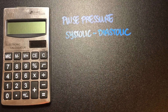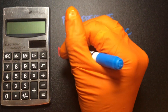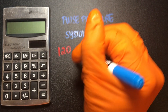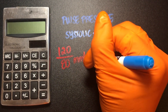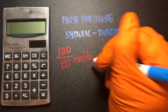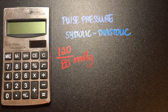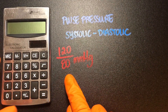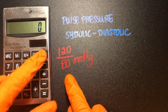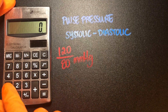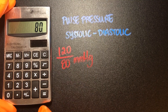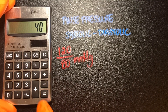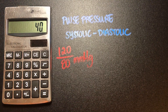Let's use the classic 120 over 80 millimeters of mercury as our example. When we plug this into the calculator, we simply do 120 minus 80, which equals 40 millimeters of mercury.